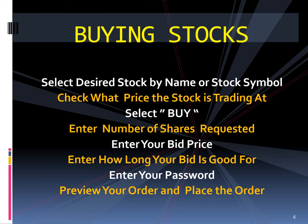To complete the bid, you enter your password, hit the Preview Order button to make sure the order is recorded as you expected, and then hit the button to place the order. If a seller accepts the price, it will be filled immediately. After placing your order, you can return to the trading screen and by choosing Order Status you can see if your bid has been taken up. If you are in a hurry to get the stock, you can increase the price in this screen.